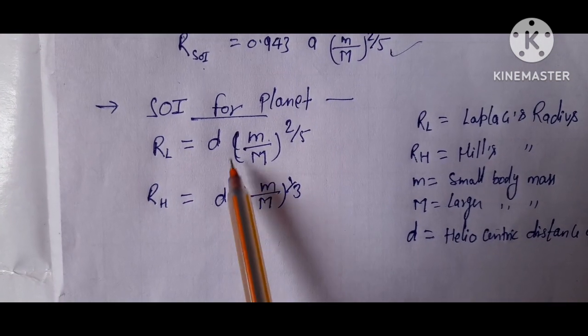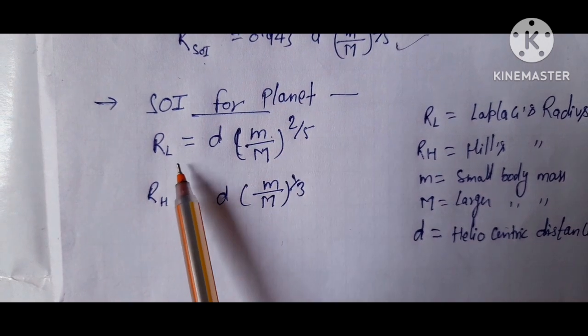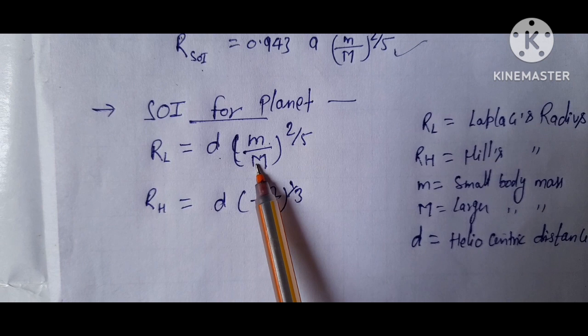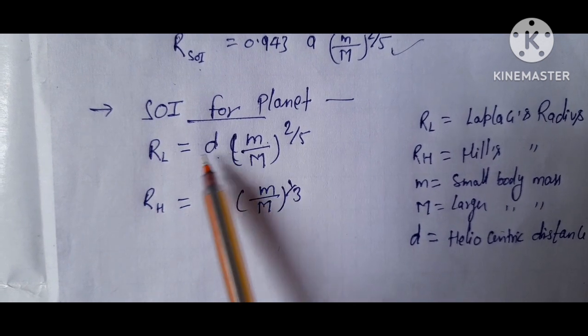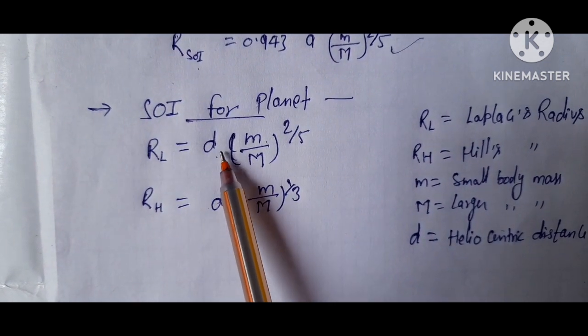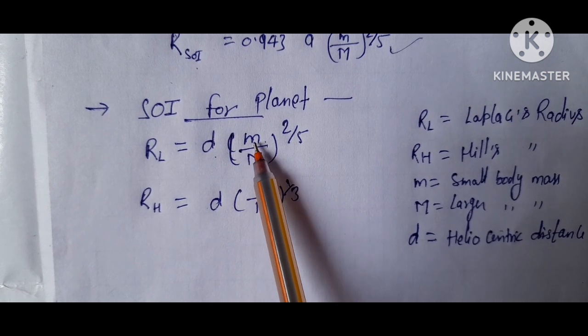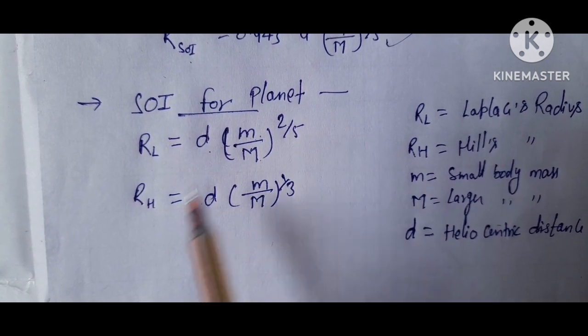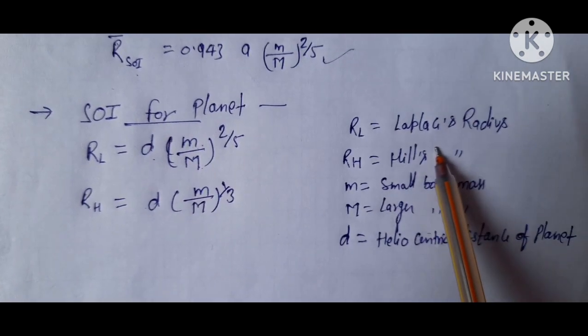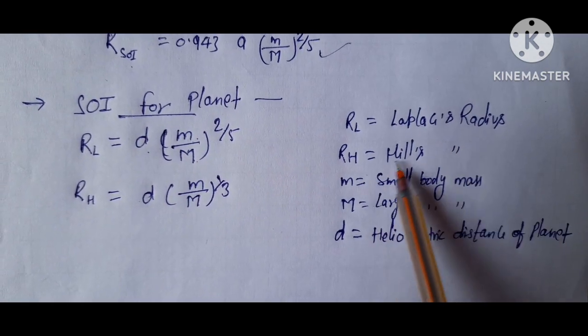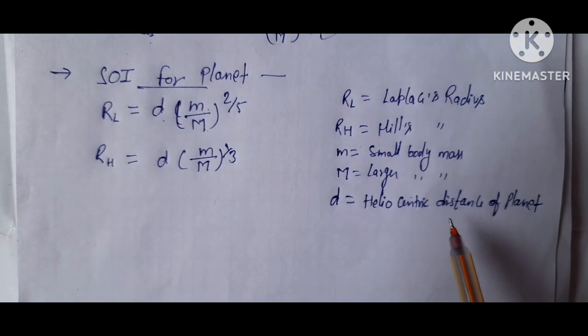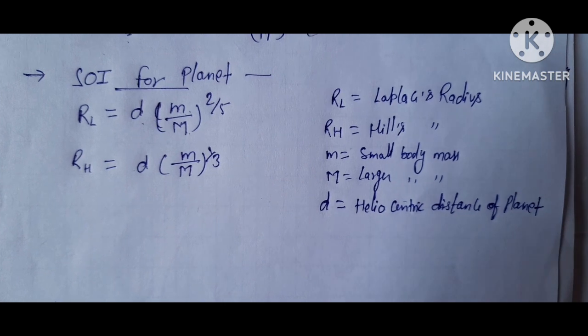So here friends, SOI used for planet: RL equals to D in simple bracket small mass divided by big mass to the power 2 divided by 5. Where RL equals to Hill's radius and D equals to heliocentric distance of a planet.